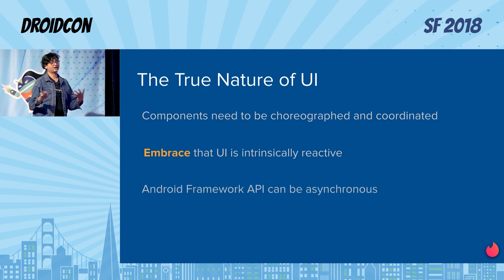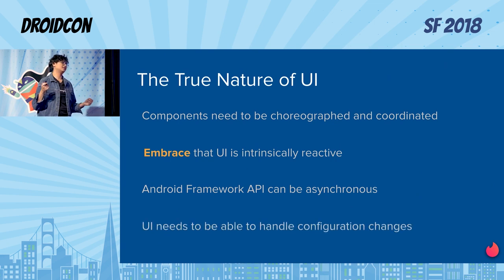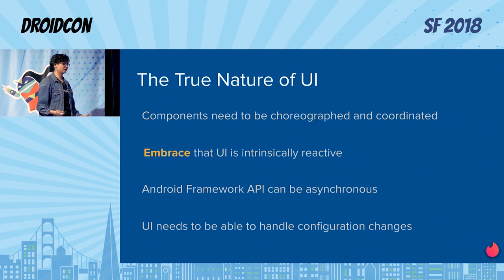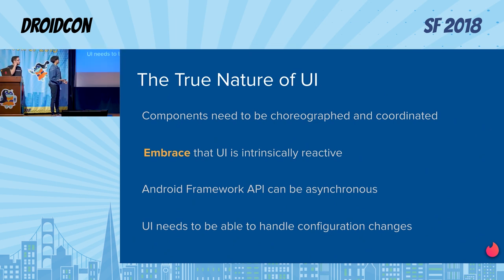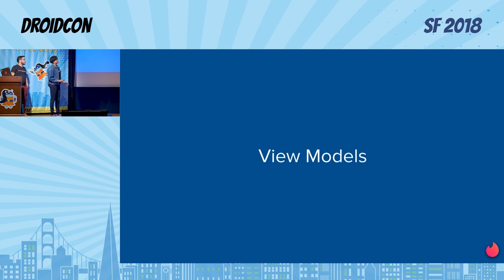The Android framework API can be asynchronous. Another important thing — and a lot of people just starting out with Android come to terms with this — is that UI needs to be able to handle, survive, and manage itself during configuration changes, and that's something super important for a high-quality app. Now Marcos is going to talk about view models.